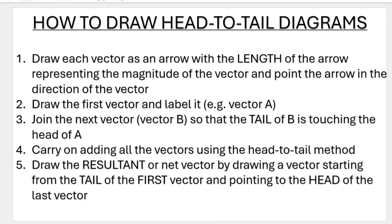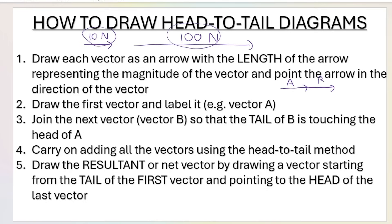Here are the steps. Draw each vector as an arrow with the length representing the magnitude. Draw the first vector and label it vector A or vector 1. Join the next vector so that the tail of the next vector is touching the head of the first vector. Carry on adding all vectors. Then to draw the resultant, draw a vector starting from the tail of the first, pointing towards the head of the last. Always label your vectors — very important.